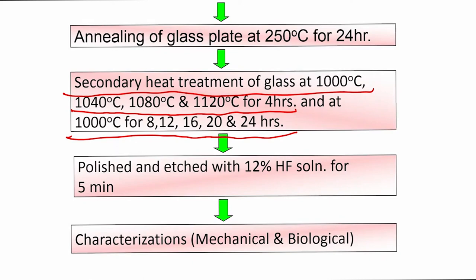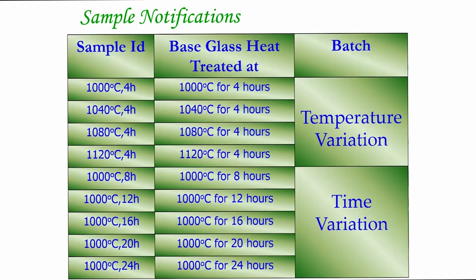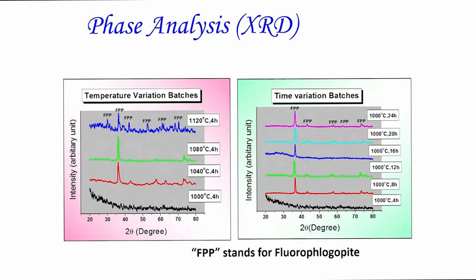By increasing heat treatment time one can expect that some microstructural characteristic phases will coarsen. After heat treatment, the sample can be polished and etched with 12% HF solution just before microstructural characterization.